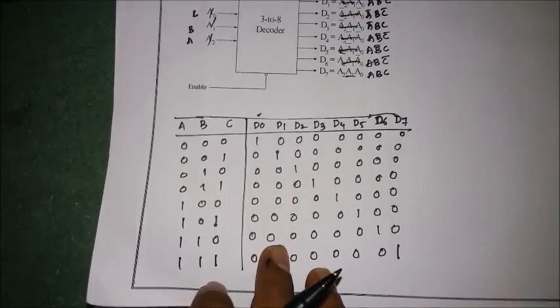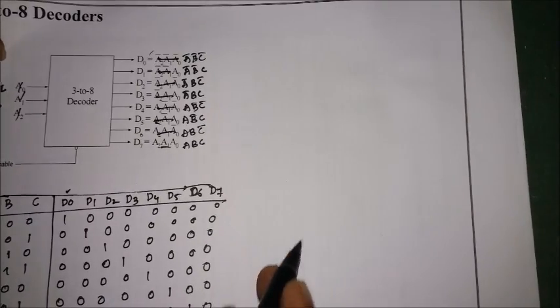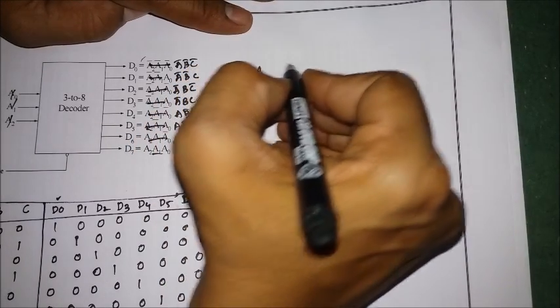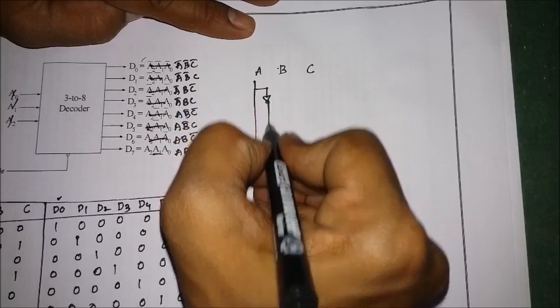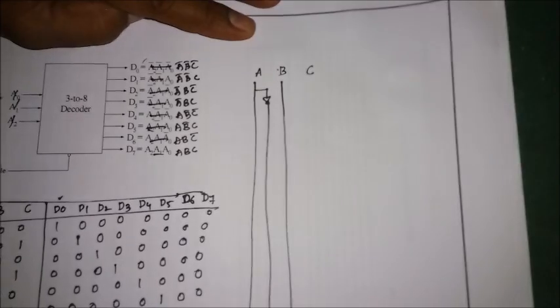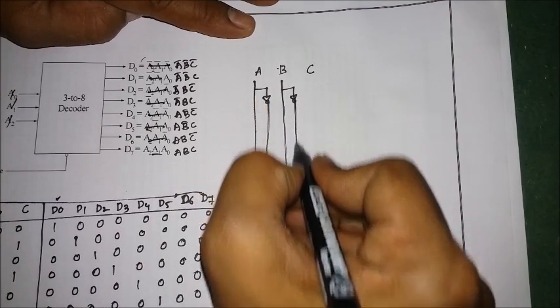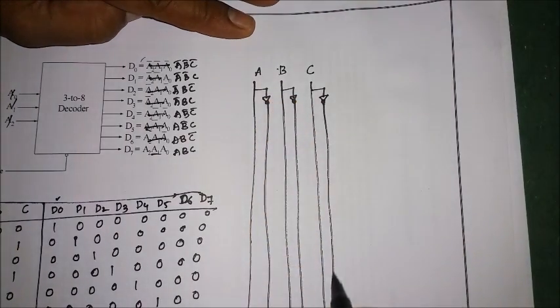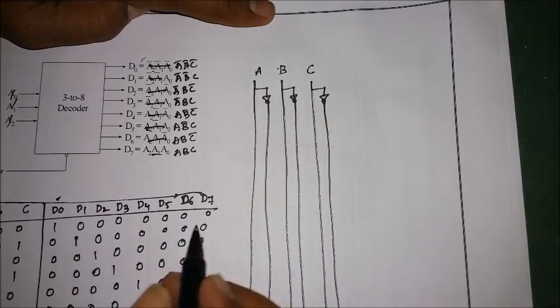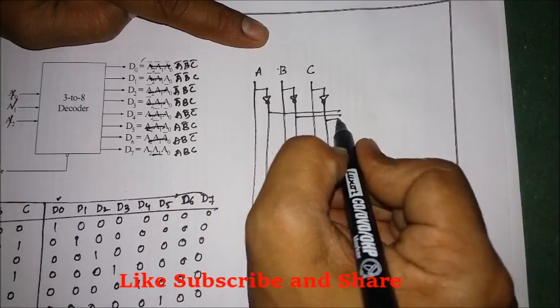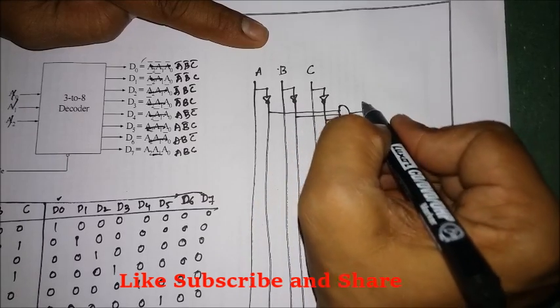To draw the logic circuit for the 3-to-8 decoder, I take inputs A, B, and C along with their complements — A, A-bar, B, B-bar, C, and C-bar. To get D0 when input 000 is given, I connect A-bar, B-bar, and C-bar to one AND gate, giving output D0.